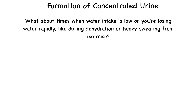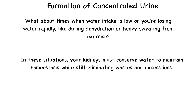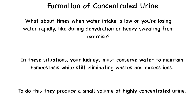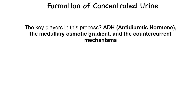Let's now move to the formation of concentrated urine. What happens when water intake is low or you're losing water rapidly during dehydration or heavy sweating from exercise? In these situations, your kidneys must conserve water to maintain homeostasis while still eliminating wastes and excess ions. To do this, they produce a small volume of highly concentrated urine, sometimes reaching up to 1200 milliosmoles per liter — up to four times more concentrated than blood plasma. The key players in this process are ADH (antidiuretic hormone), the medullary osmotic gradient, and the countercurrent mechanisms.